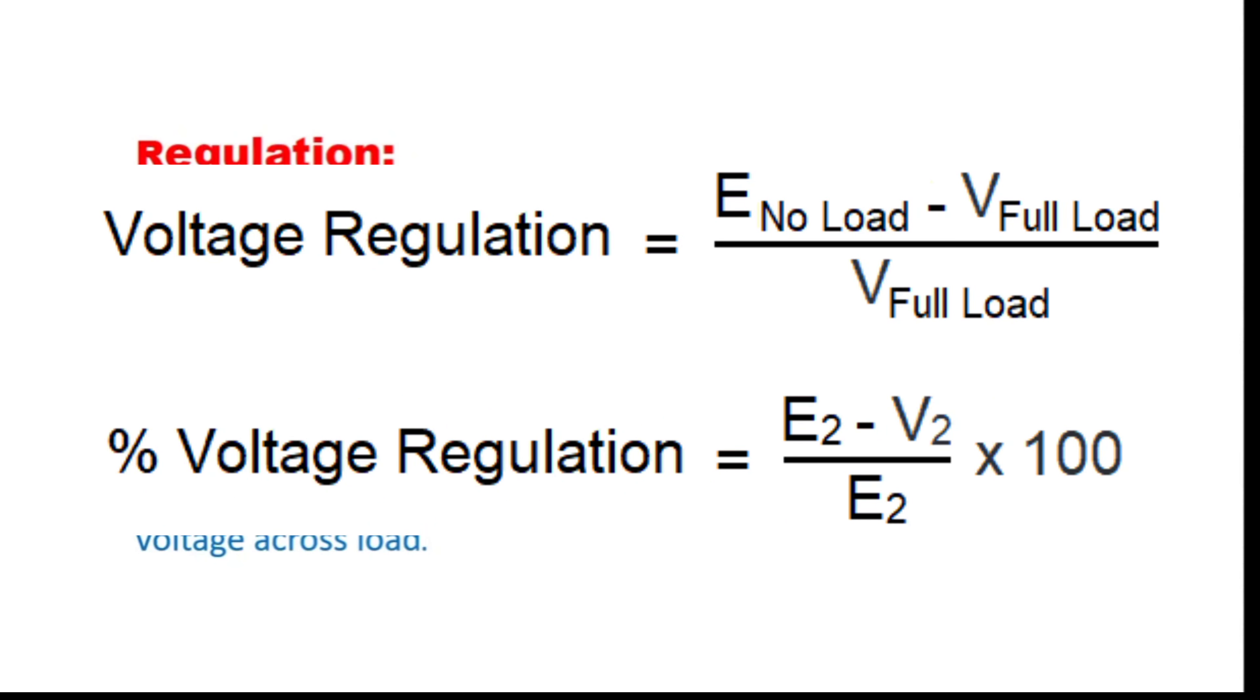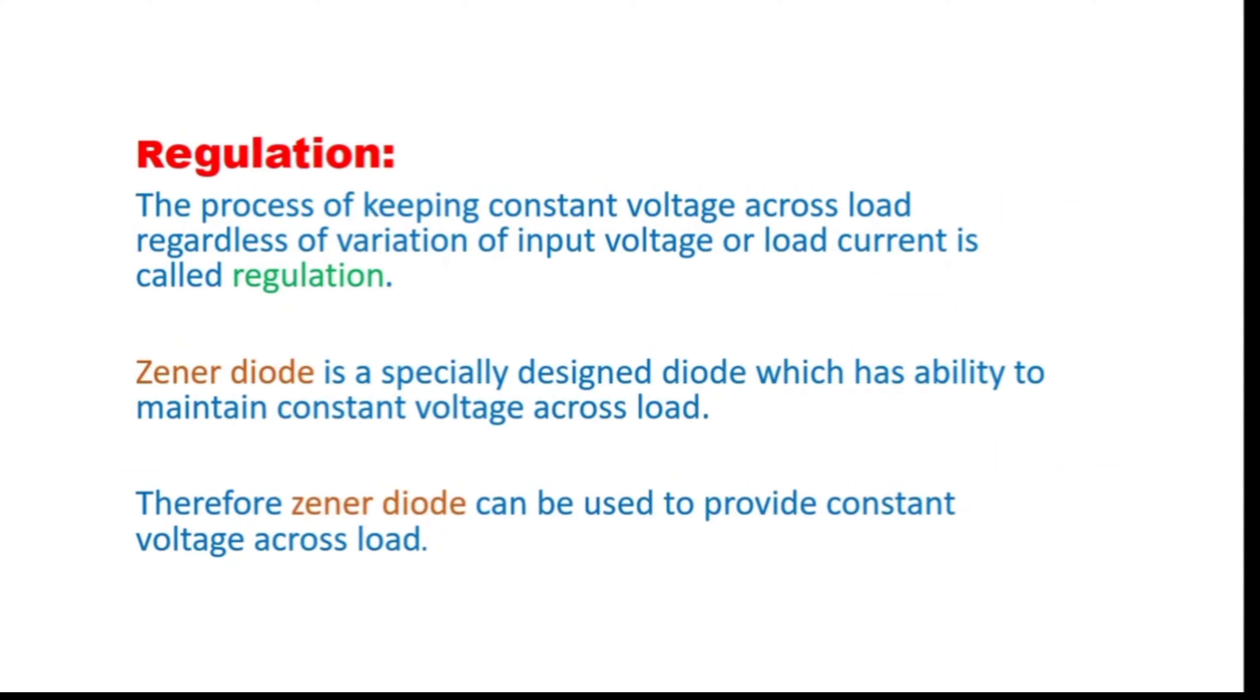Zener diode is specially designed, which has ability to maintain constant voltage across the load. In reverse bias, if you connect the Zener diode across the load, it acts as voltage regulator. Therefore, Zener diode can be used to provide constant voltage across the load. How it can be used to provide constant voltage across the load? Let us see.